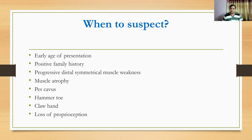If there is rapid progression of muscle weakness, you have to think of other conditions like CIDP. If it is asymmetrical, it may sometimes be confused with motor neuron disease, because MND usually has an asymmetrical presentation.